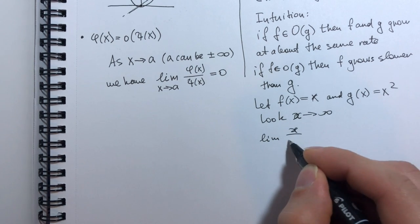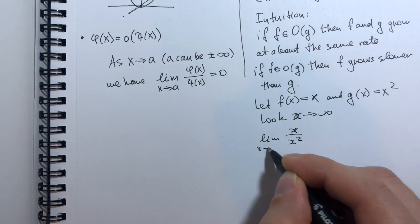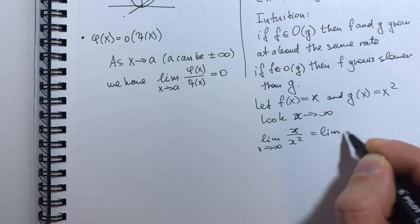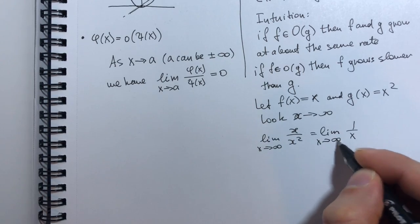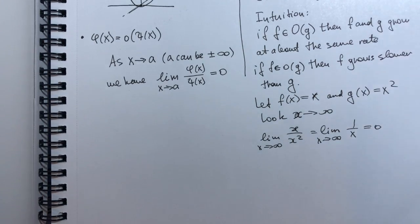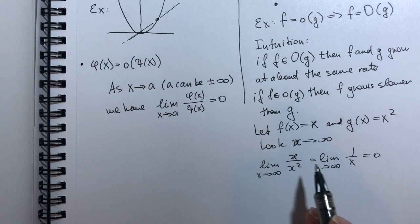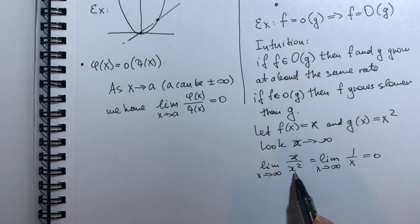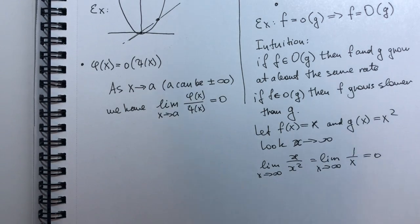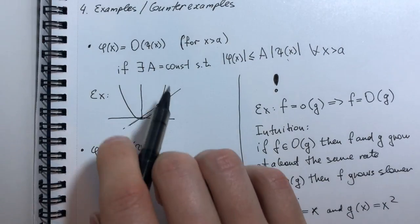So what we get is x over x squared as x tends to infinity, which is just the limit of 1 over x, and of course it's equal to 0. So you see, x grows at a much slower rate than x squared, so their ratio tends to 0, which is very intuitive.